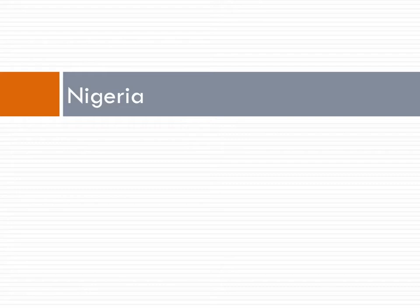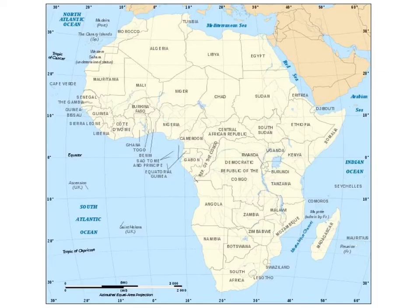We're going to switch gears from folktales now, and spend a little bit of time discussing, on a very high level — this is a brief overview — the history of the Nigerian state. The first thing to do, and perhaps the most helpful thing to do, is try to locate Nigeria on a map of the African continent. Perhaps you're very well versed with Africa and you already know where Nigeria sits, but if you don't, let's take a look.